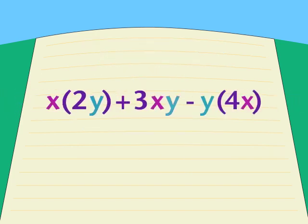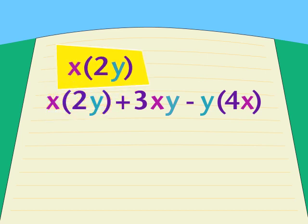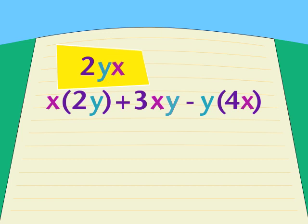What does that tell you about this problem? Do you see any like terms to simplify in this expression? Sure you do. Look at the first parentheses and multiply — you get 2xy. Or how about 2yx? They're the same thing, remember? You make it 2xy.